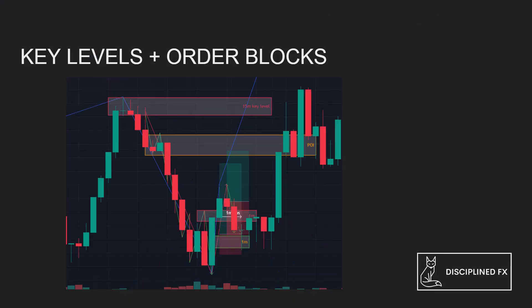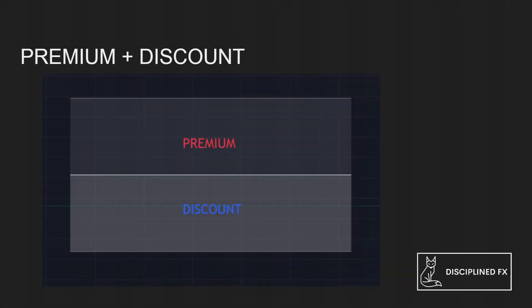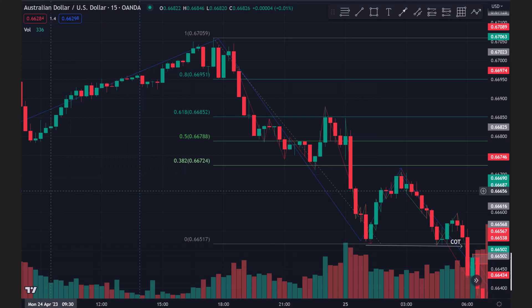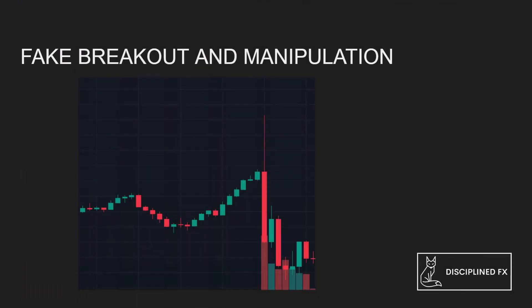Keep in mind that Smart Money likes to buy cheap at areas of demand and then sell high at areas of supply, which leads to the fifth concept: identifying premium versus discount areas. When a seller sets an order at a high price, this is known as selling at a premium. When a buyer buys at a low price, this is known as buying at a discount. Using a Fibonacci tool on a trend at the 50% retracement zone, you can easily find these areas to know whether a certain price or area has a high probability of being an order block zone, or if it's too risky to trade.